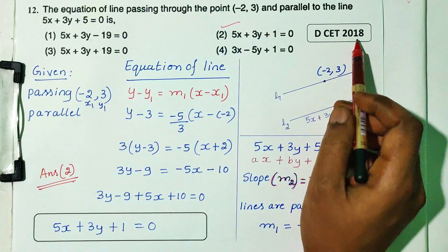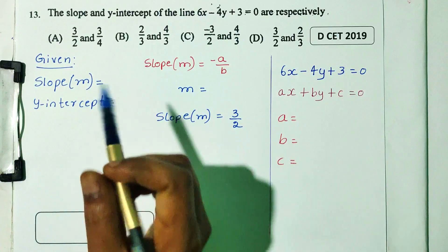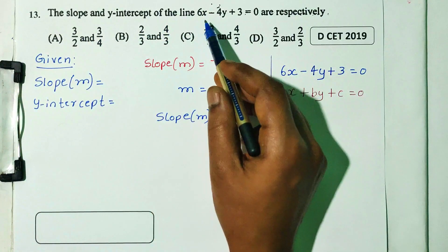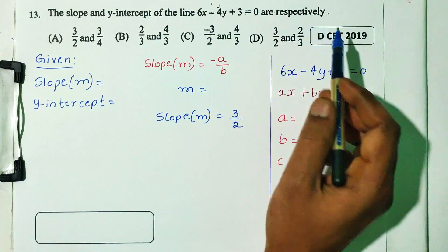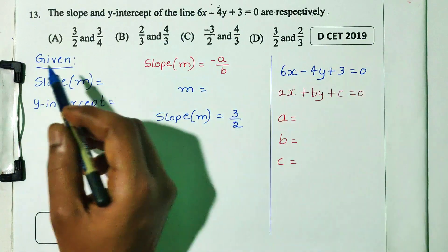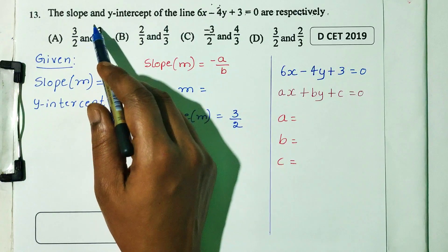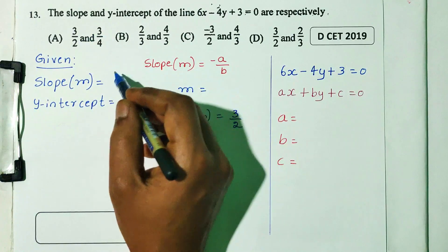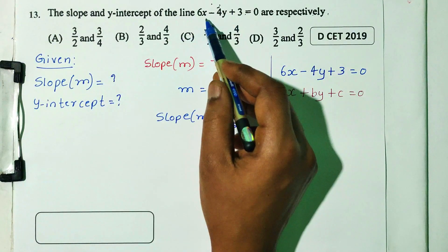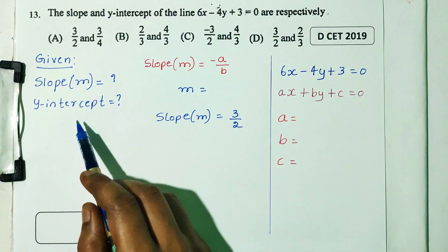Next question: given the equation 6x minus 4y plus 3 equals 0 from DCT 2019, find the slope and y-intercept. This is the general equation form, so we will compare to ax plus by plus c equals 0.